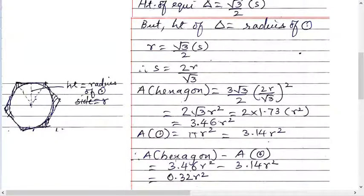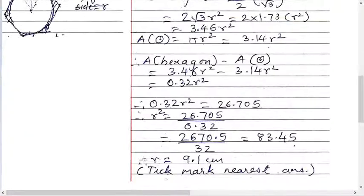Now what is this? This difference means the darker portion. But that is already given. So 0.32 r square equals 26.705.